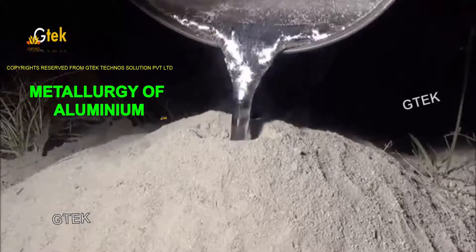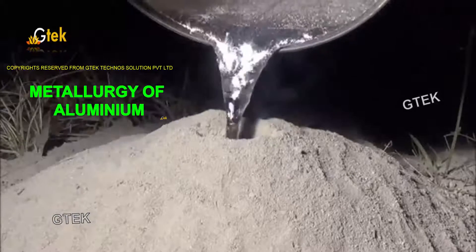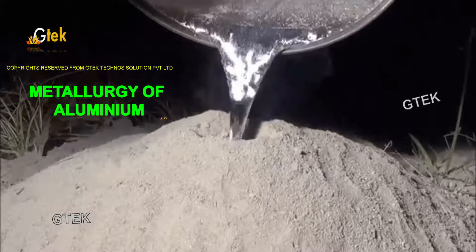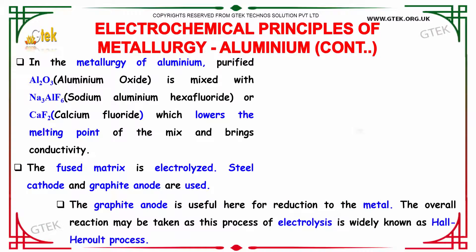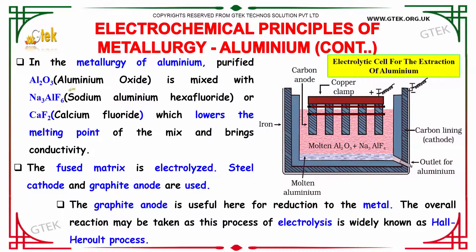Let's discuss the metallurgy of aluminium. In the metallurgy of aluminium, purified aluminium oxide is mixed with sodium aluminium hexafluoride or calcium fluoride, which lowers the melting point of the mix and brings conductivity.